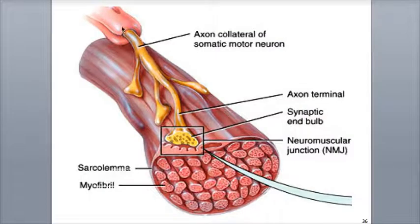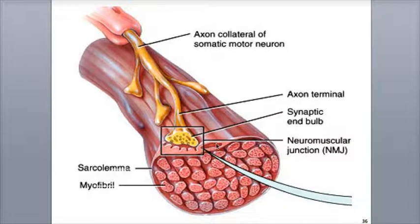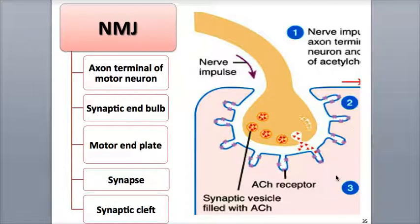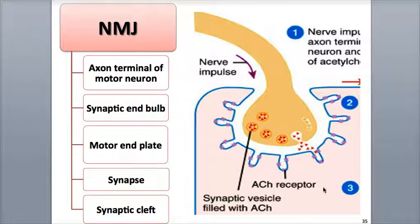As the motor neuron reaches the NMJ, its axon terminal — the end of the neuron — branches into a group of knob-like extensions called the synaptic end bulbs. This is the part of the neuron that associates specifically in the NMJ. There are hundreds of tiny membrane sacs called synaptic vesicles located inside the end bulbs, which contain high concentrations of a neurotransmitter called acetylcholine, symbolized as ACh. Acetylcholine is the messenger chemical that will be secreted out of the neuron and into the synaptic cleft.